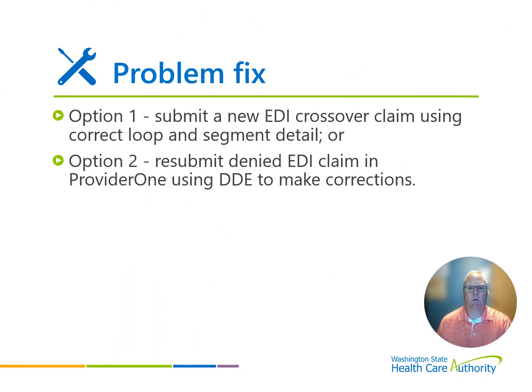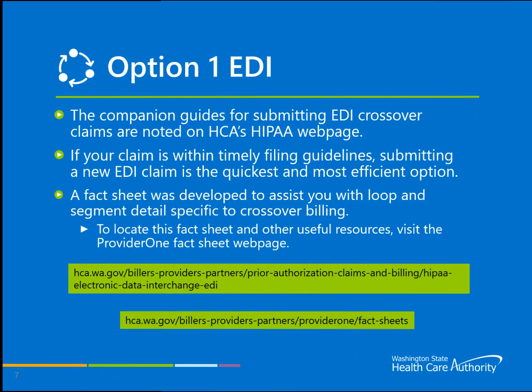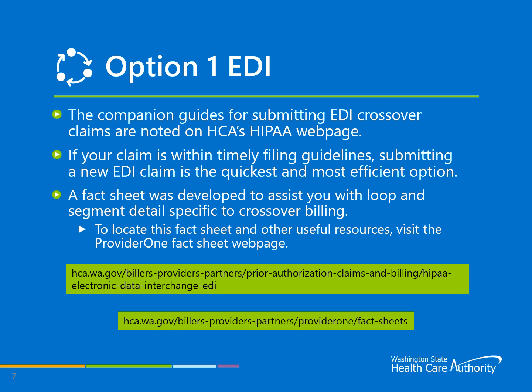You have two options to resolve the denial. You can submit a new electronic crossover claim through your clearinghouse or EDI software, or resubmit using the direct data entry option in the Provider One portal. Option number one for resubmitting your claim electronically would be through your clearinghouse or EDI software. Using your clearinghouse and EDI software vendor to get a new claim submitted would be the quickest option for correction. We have provided the 5010 EDI companion guides as well as a fact sheet to assist with HIPAA, EDI loop and segment details. Both resources can be found on the links noted here on the slide.